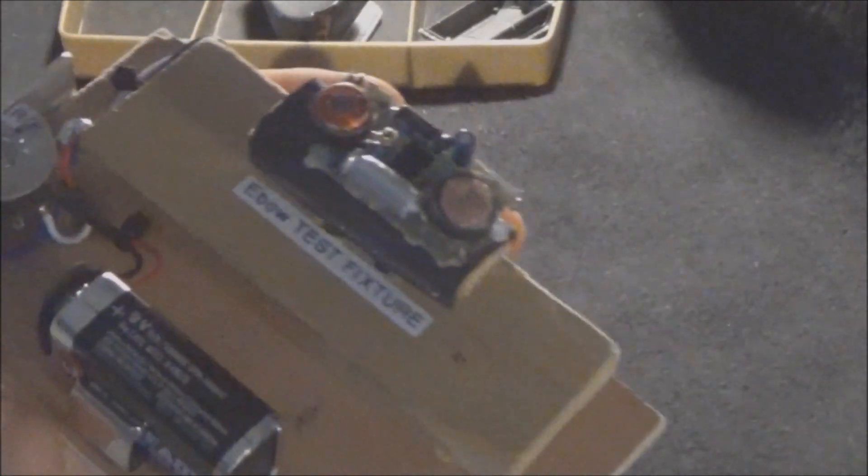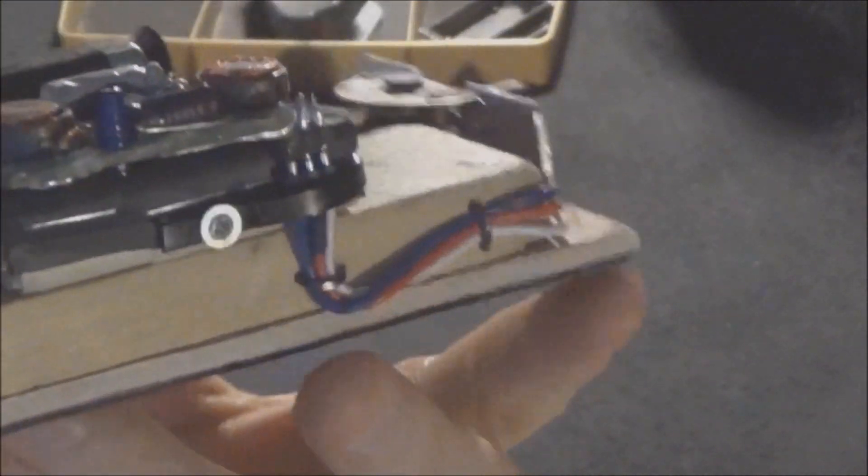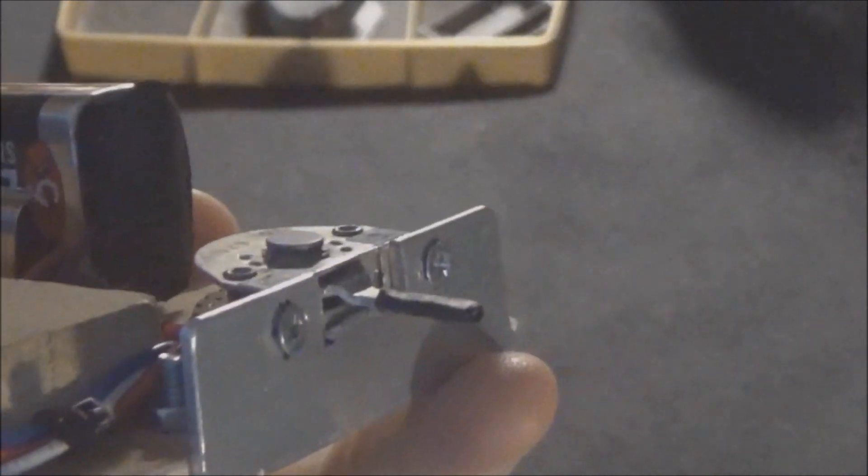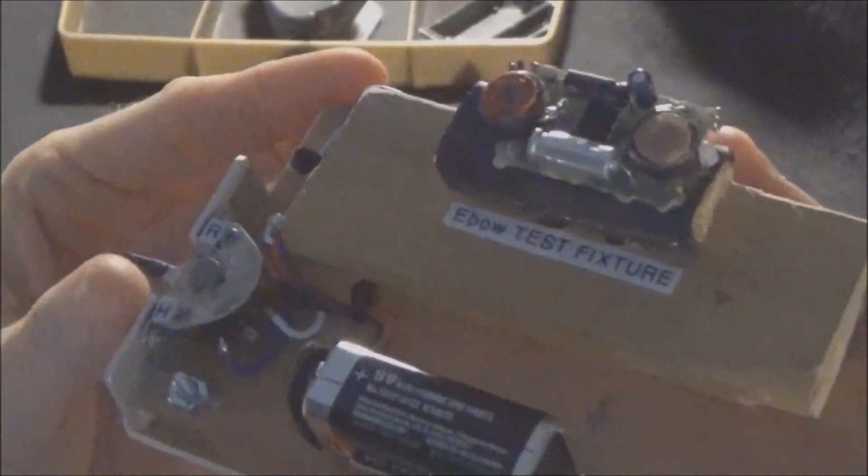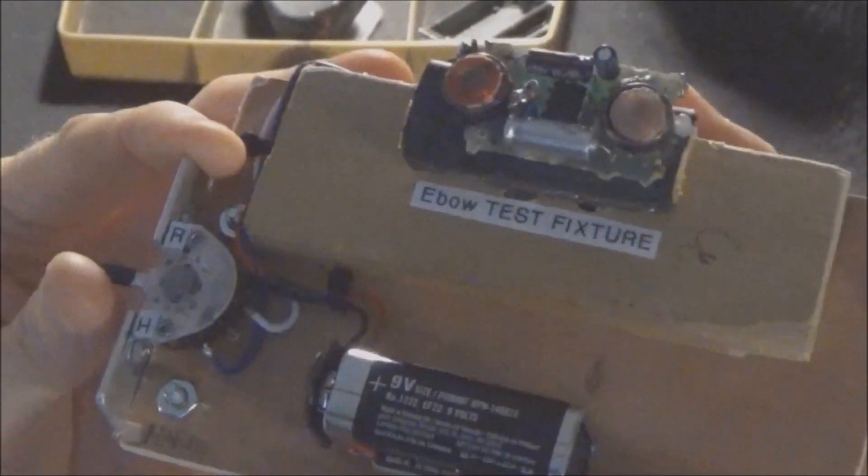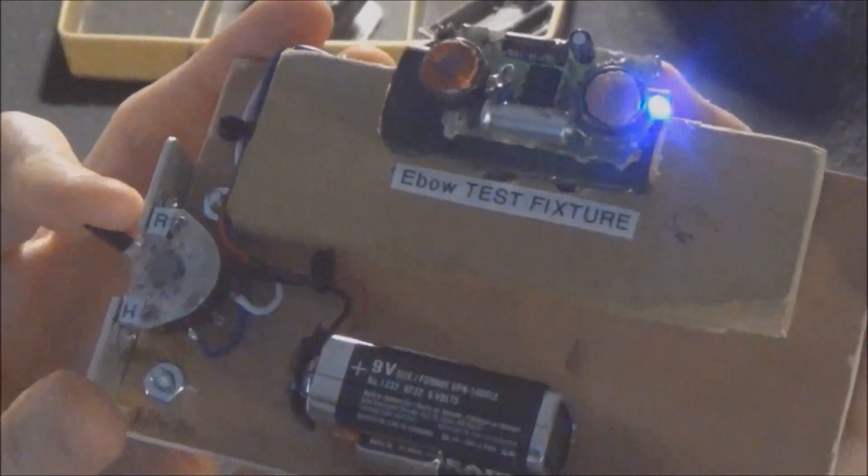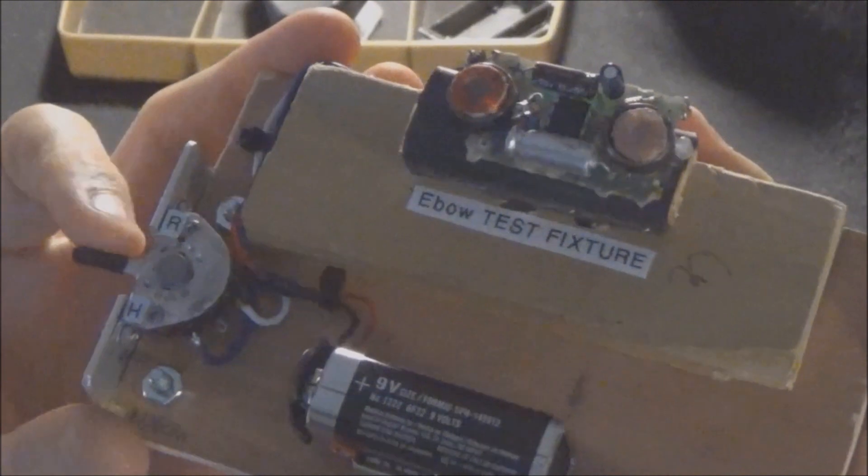With the circuit board mounted on here, it's very rock solid. I wanted to make sure it doesn't move around at all. We can put this on the table and flip it on. I've got it marked so R is regular mode, center is off just like the real Ebow, and then harmonic mode.